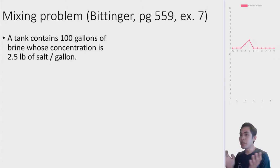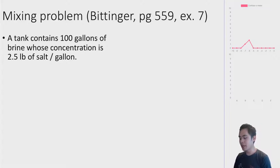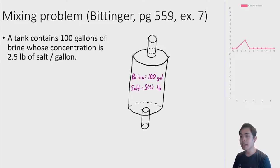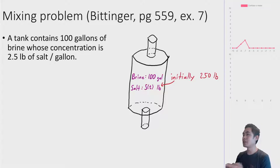Suppose you have a tank with 100 gallons of brine — brine is just salt water — with a concentration of 2.5 pounds of salt per gallon. We have a tank with 100 gallons of brine. Let's call S of T the amount of salt currently in this tank. Right now it's going to be 250 pounds, but over time we're going to do stuff to this tank and the amount of salt is going to change.